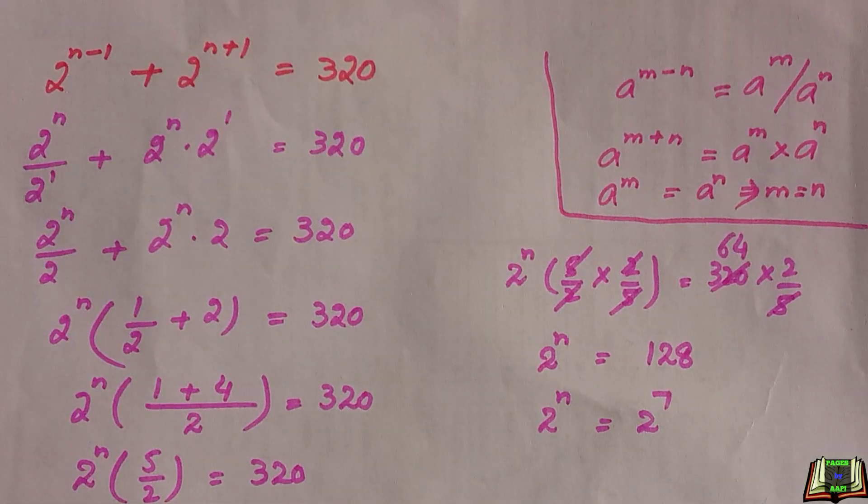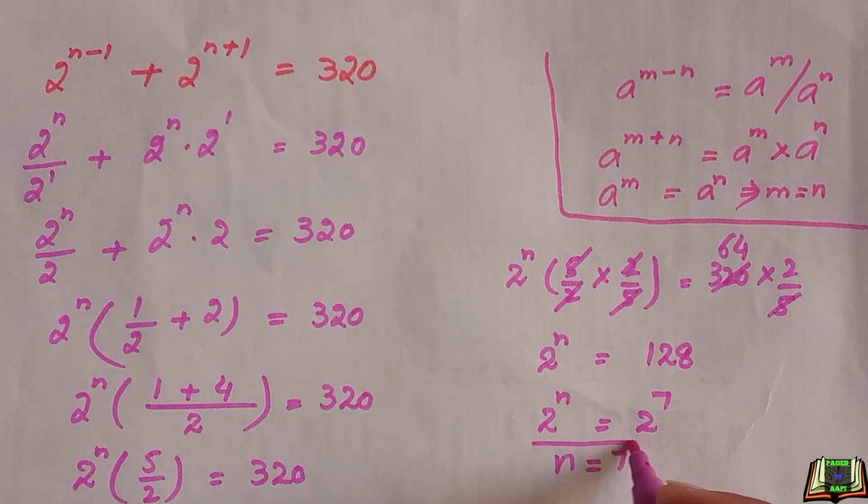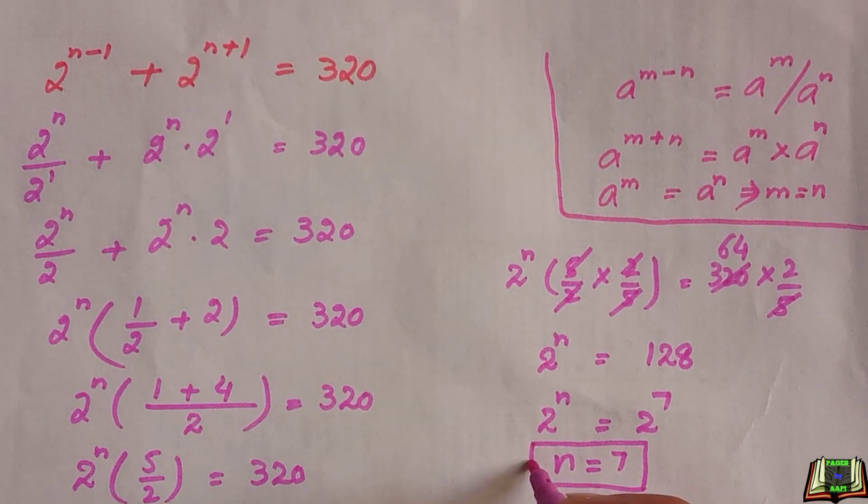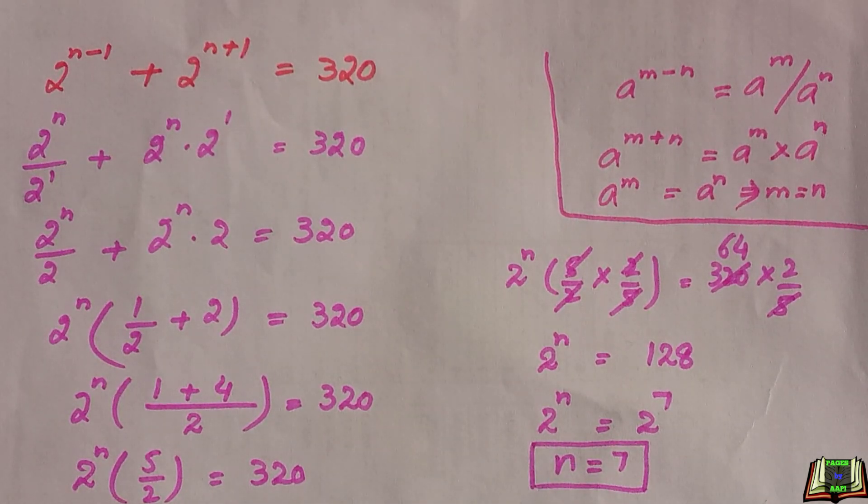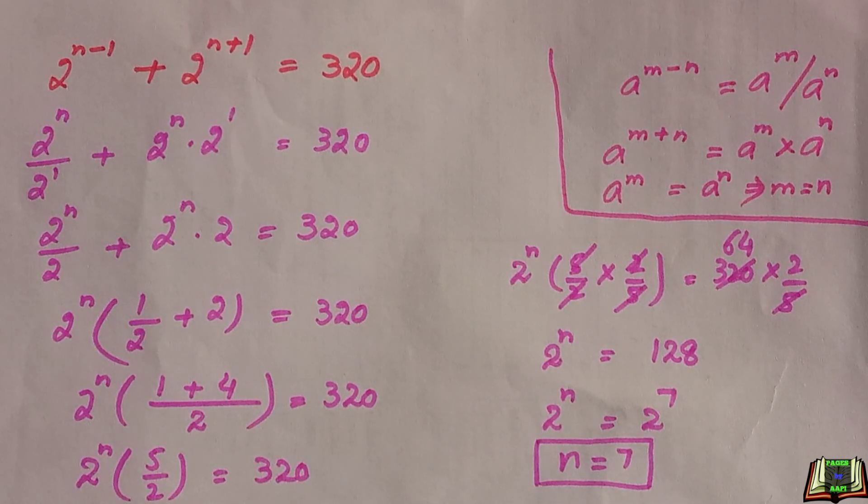So according to that, n is equal to 7, which is the final and required value of n. I hope you find this solution easy. If you have any question or any query, write in the comment box. Don't forget to hit the like button. See you in the next video. Till then, bye bye.